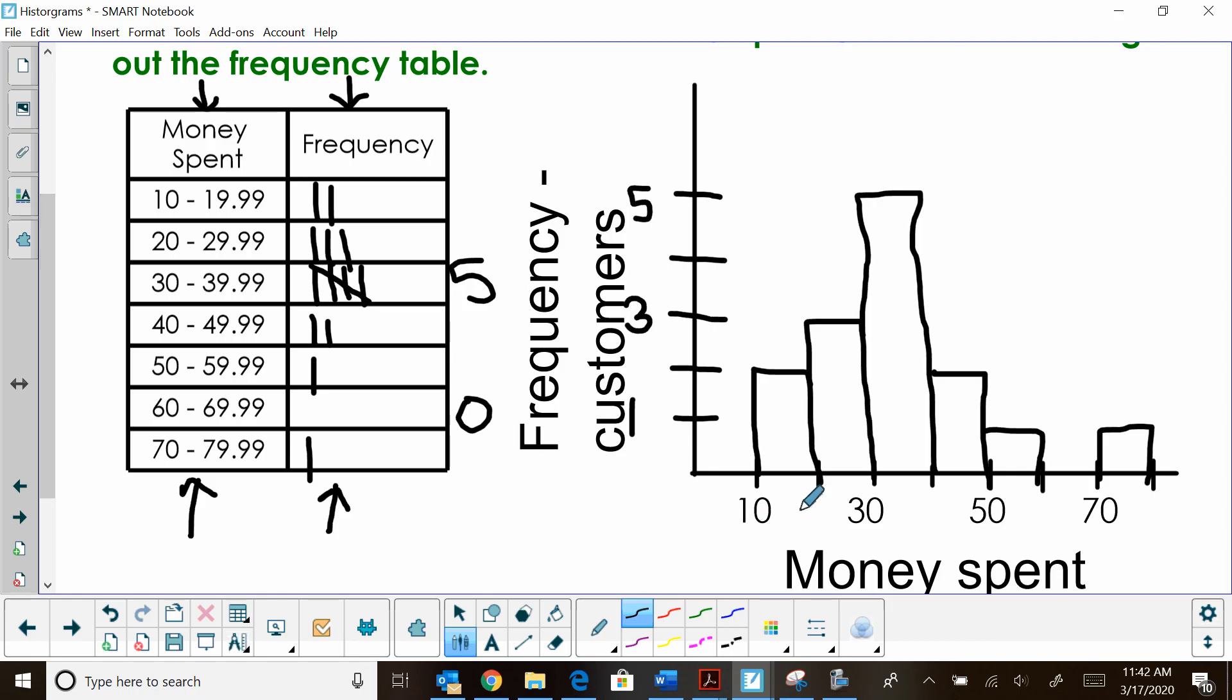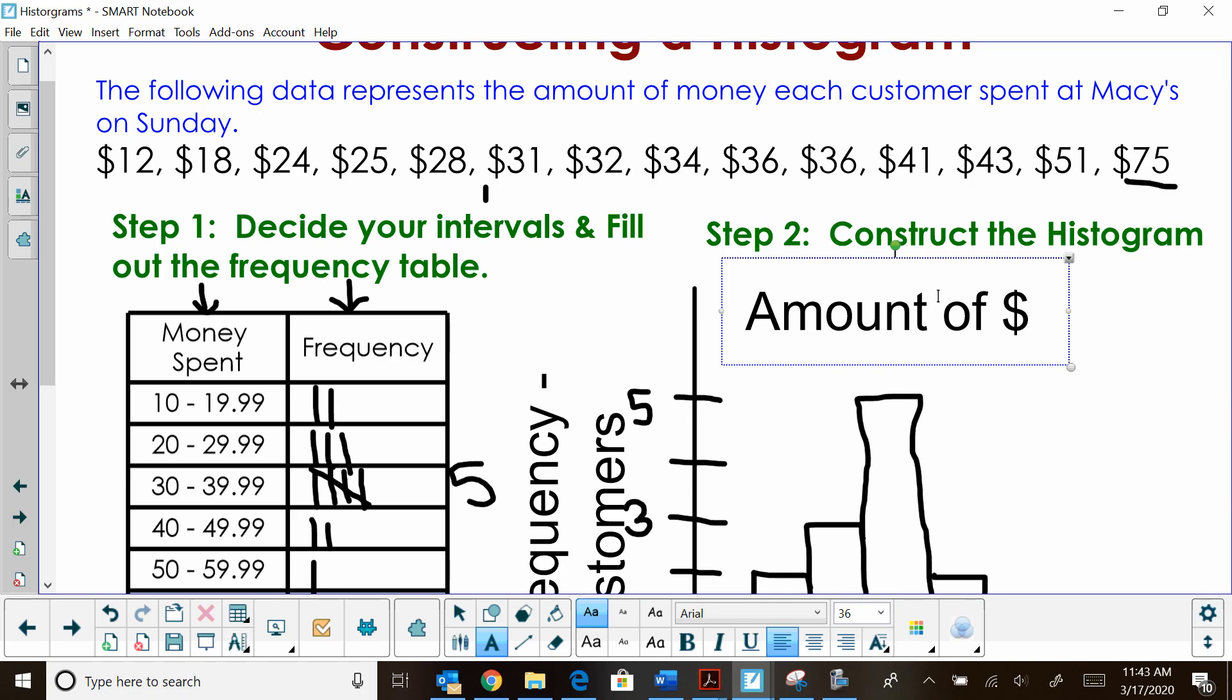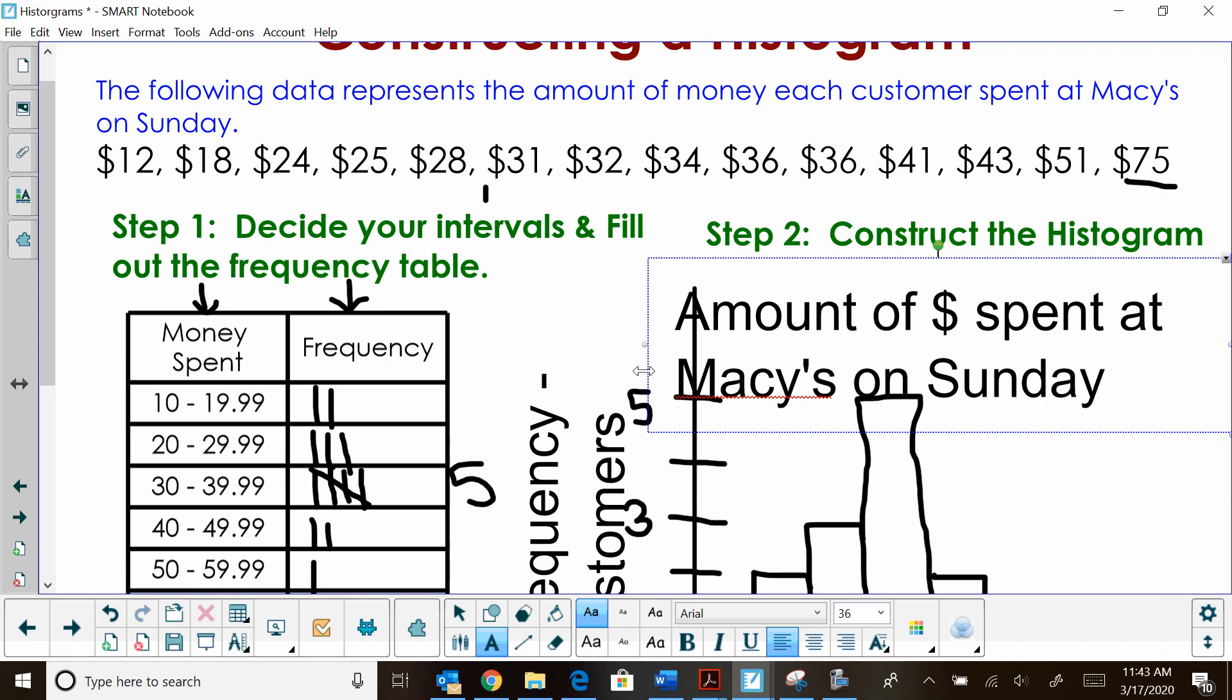So now I've got the x-axis labeled with quantities and a title. The y-axis labeled with quantities and a title. But I need a title to represent the entire graph. Well, what does this data represent? If you remember, that was the money that was spent at Macy's on Sunday. So that's what I'm going to label it. The amount of money spent at Macy's on Sunday. There we go. And you have now got your table.